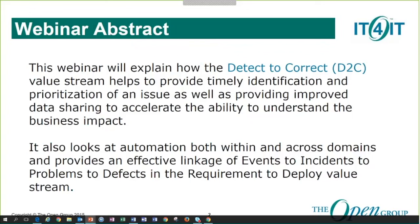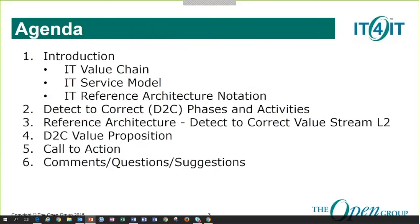What are we going to be talking about today? The full purpose of this webinar is to shine the spotlight on this critical value stream of detect-to-correct. We'll talk about how it contributes to the overall IT for IT value chain, what are the essential components within that value stream, and we'll highlight the business value. Our time is divided into six areas: a quick review of the value chain, the support and service model and reference architecture, then the phases and activities within detect-to-correct, the level two reference architecture, the value proposition, and a call to action.